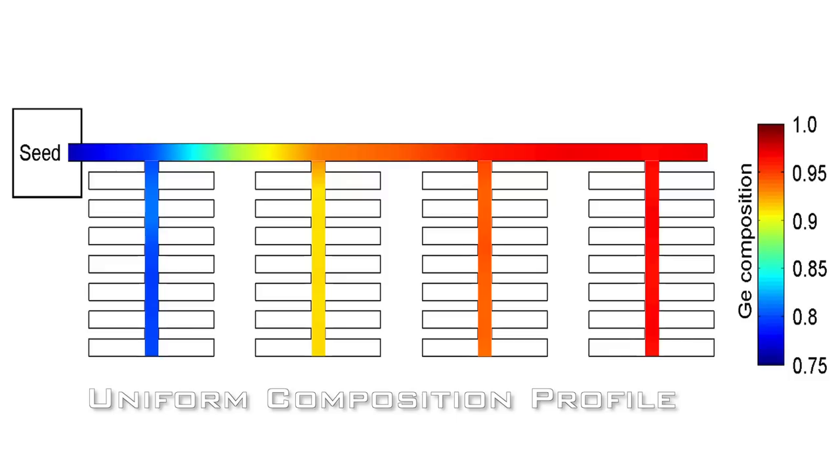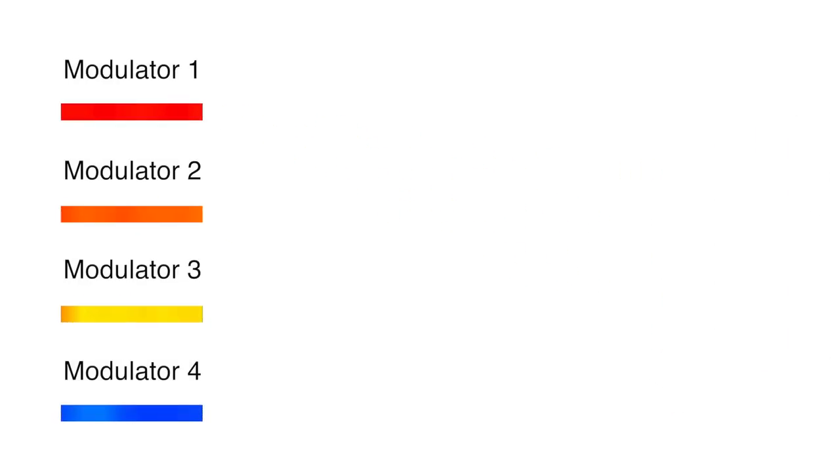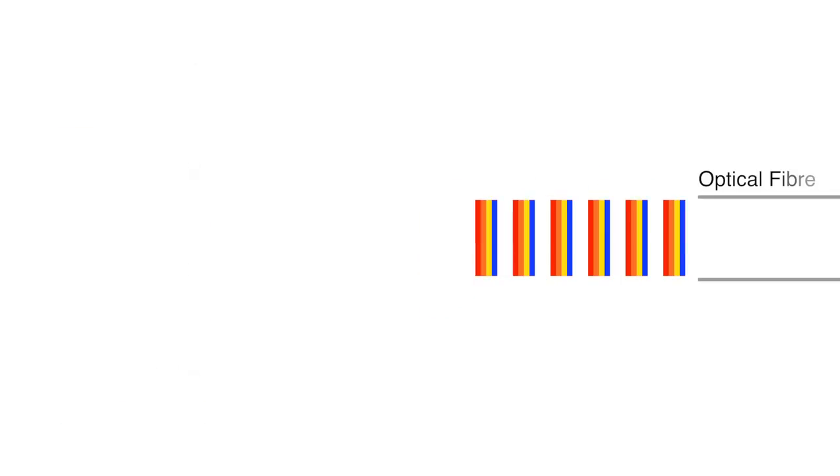In a structure like this, multiple uniform composition strips can be grown in a single step. Each composition can then be used to form a modulator that works at a slightly different wavelength. These signals can then be multiplexed and transmitted on a single optical fiber.